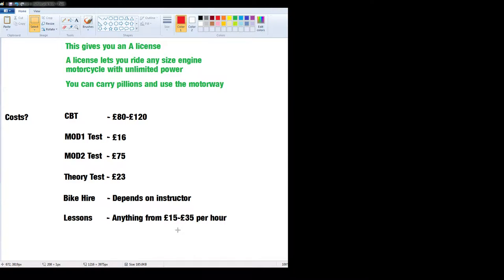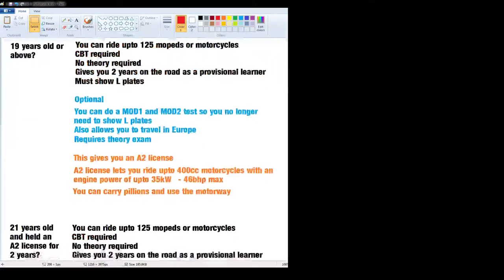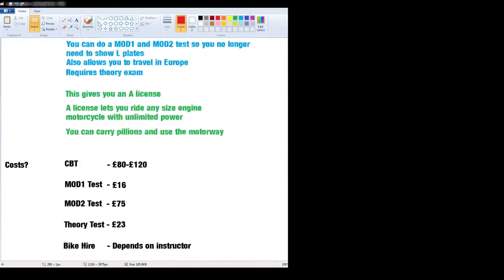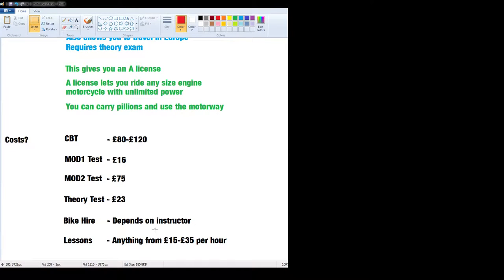I passed my Mod 1 and Mod 2 the first time. I was quite lucky. Your theory test will be £23. Your theory test will last you for two years from whenever you've done it. Which obviously means if you're doing your A2 license to then do your full license, you've got to do your theory test twice. It's just something to consider money-wise. Bike hire depends on instructor, it's about £50. If you've got your own gear, that might save you a tenner here and there.